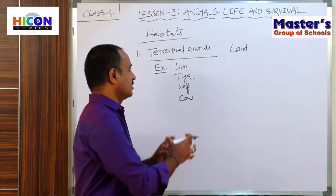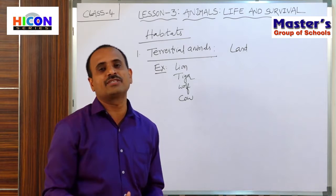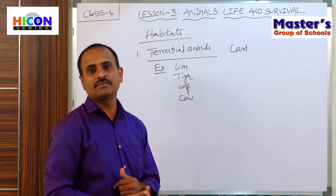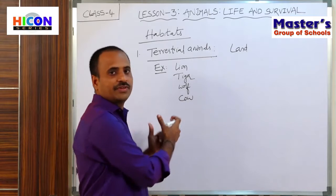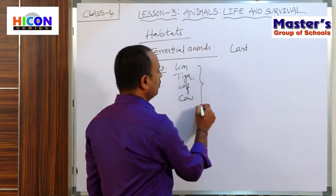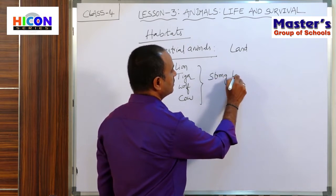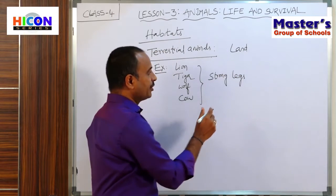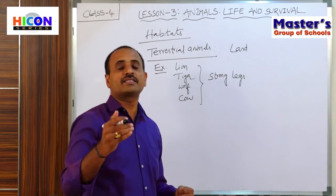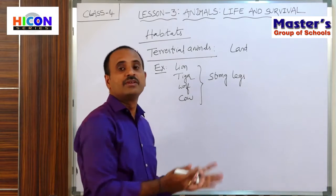These animals have some special features — that means they have some adaptations in their bodies to survive on the land, to survive in their habitat. So what are some special features and adaptations? These animals have strong legs. By using these strong legs, they can move for longer distances in search of their food.